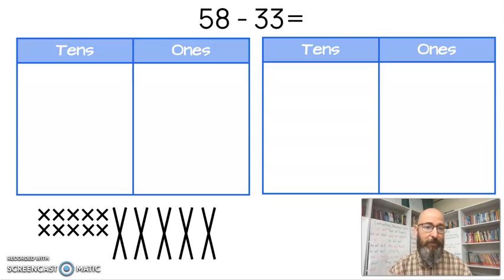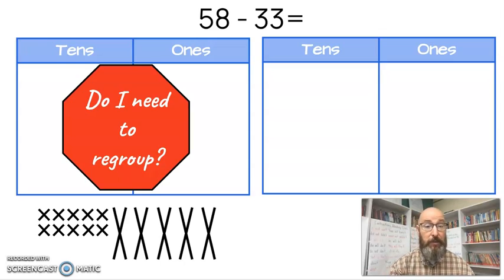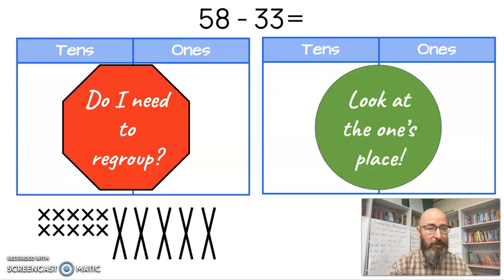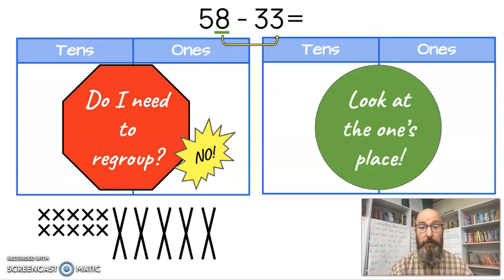58 minus 33. Again, the question, do I need to regroup? What is the ones place? I'm sure you said that. So we look at the ones place in the minuend, the larger number, and we see an eight there. And then we compare it to the ones place in the subtrahend. And it's a smaller number and I see a three there. Is eight larger than three? It is. So if it is, then I don't have to regroup, which again is great because it makes the question a little bit easier.